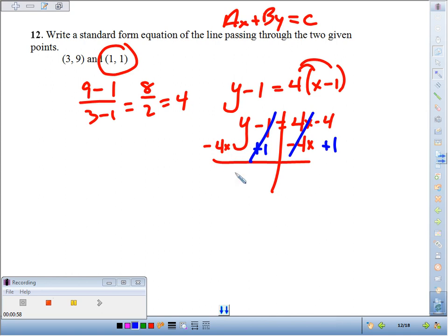So my final answer in standard form, now that I've got the variables on the left, negative 4X, positive Y. Over here, negative 4 plus 1 makes negative 3.